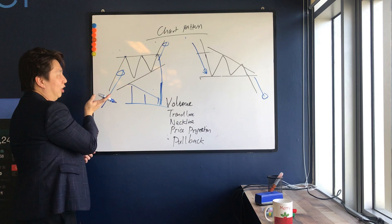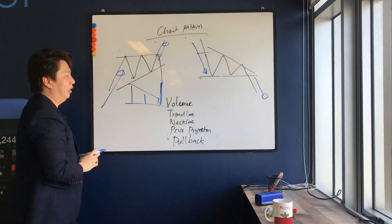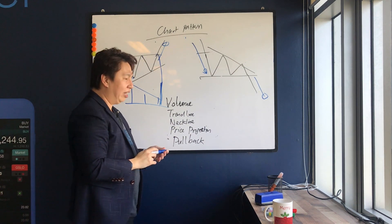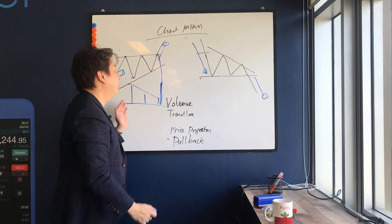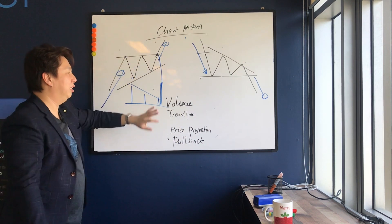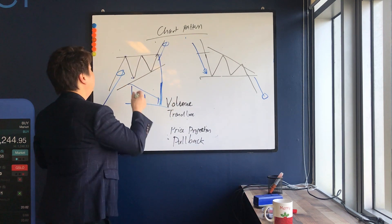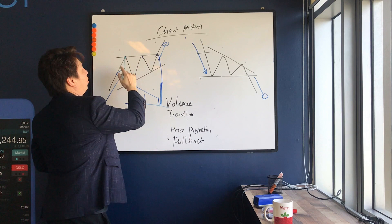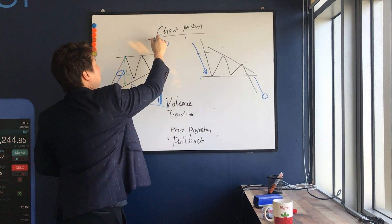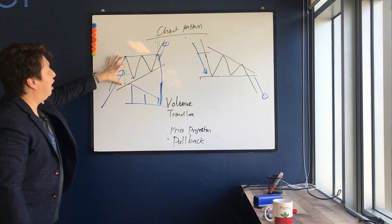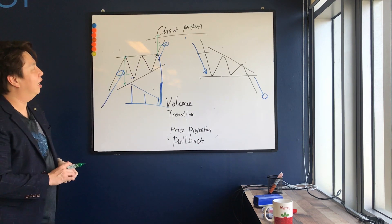For trend lines, you can draw a trend line touching the lower two bottoms. For neckline — in continuation patterns there isn't really a neckline because the pattern is continuing to go up further. For price projection, we use the highest point — the biggest part of the triangle from here to here. We call this L, the largest part of the triangle, and use it to project upwards from the breakout point to give the price projection target.